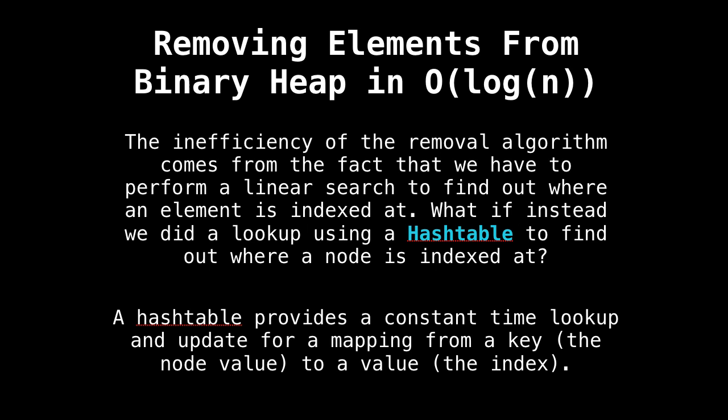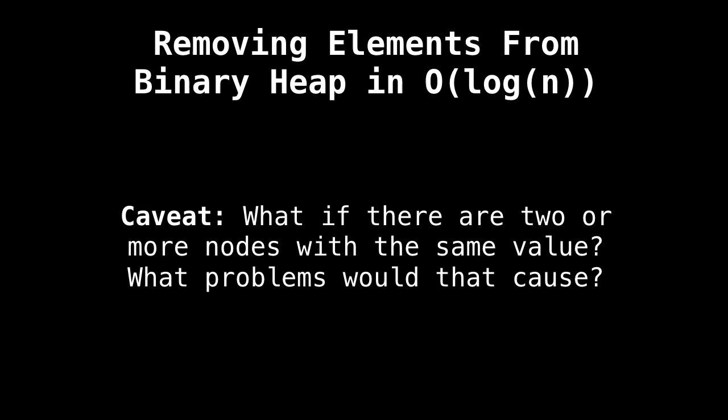Back to the central issue, we have a bunch of nodes scattered across our heap at some positions. And instead of doing a linear scan to find out where the node we want to remove is, we just want to be able to do a lookup and figure that out. The way we're going to do this is that every node is going to be mapped to the indexes found at. So when we want to remove a particular node, just look up its index, instead of doing a linear scan. Sounds good, right?